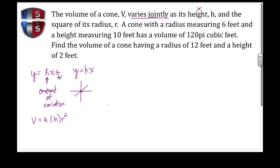To solve these problems we have to do two equations, basically the same equation with different missing pieces, so we can find what they're asking for. In this example, let's rewrite the equation: V equals k h r squared.